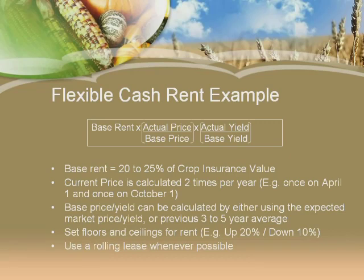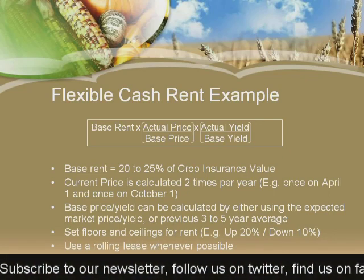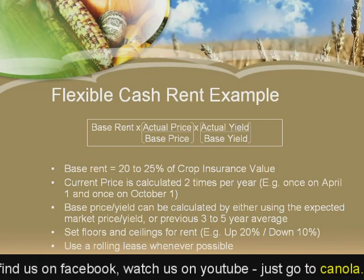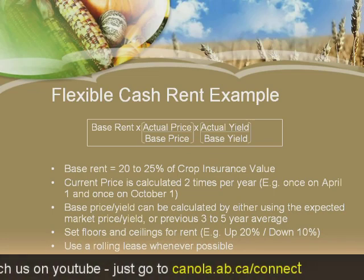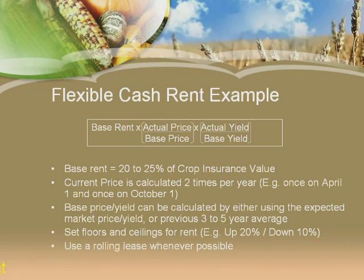For example, a little west of the Highway 2 corridor south of Red Deer, we may see an AFSC crop insurance value of $220 an acre. 25% of this amount is $55 an acre for a base rent. We suggest changing the price of this base rent based on what's happening in the market, allowing producers to share some risk and reward with landlords. You can use just price, or both yield and price. I prefer using both because if you only used price and had high prices but low yields, you could end up paying your landlord more but still have a poor return on your crop.